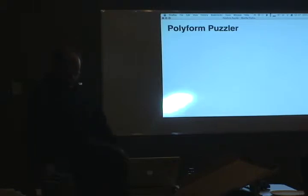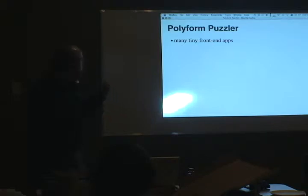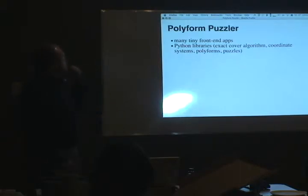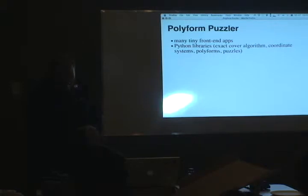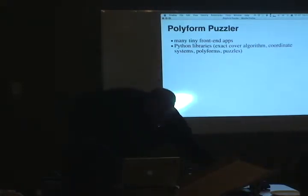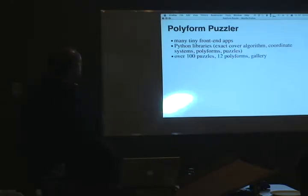My third goal is to talk about Polyform Puzzler. It's a set of tiny front-end applications — two or three lines long — that call a Python package. The libraries include: the exact cover algorithm, coordinate systems, the polyforms themselves, and the puzzles. It's easy to add new puzzles and even new polyforms, and not incredibly difficult to add new coordinate systems. We've got over 100 puzzles in the project, made of 12 polyforms. It's not an interactive program yet — if somebody wants to write a GUI for it, that'd be really cool.